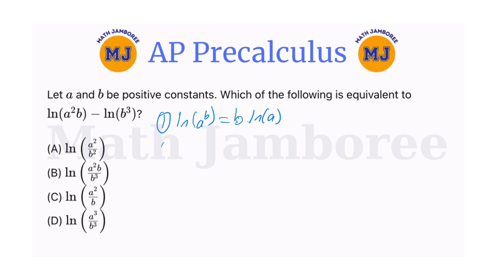Number two, the quotient rule. In the quotient rule, we have that the natural logarithm of a over b can be written as natural logarithm of a minus natural logarithm of b.